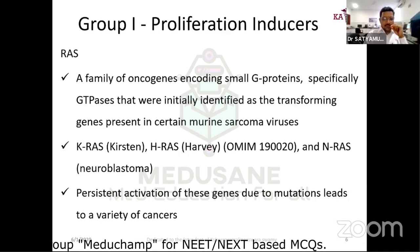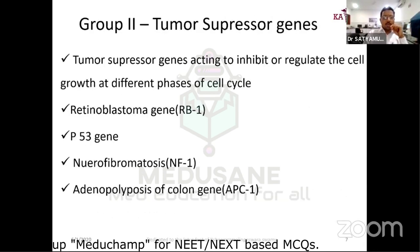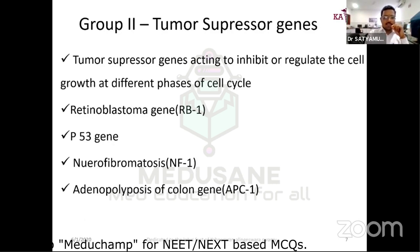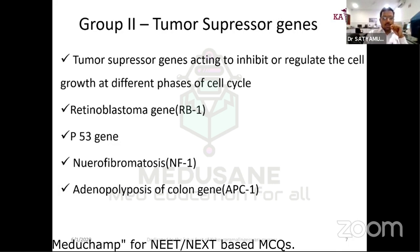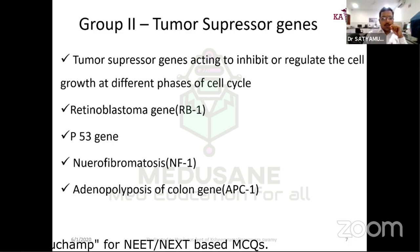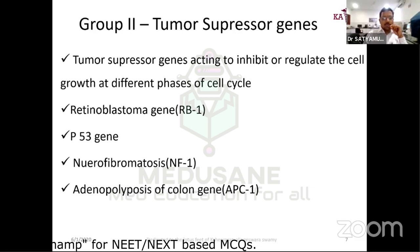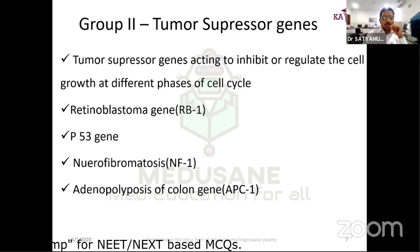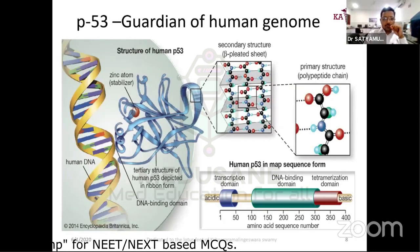Group 2, tumor suppressor genes, is the most important part of this session. Tumor suppressor genes act by inhibiting or regulating cell growth at different cell cycle phases — G1 checkpoint, G2 checkpoint, and M checkpoint. Any abnormality in tumor suppressor genes can stop tumor suppression, thereby leading to tumor progression.